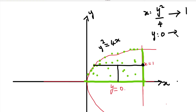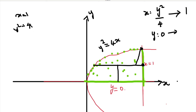For the y upper limit, we move the strip to the top corner of the region, which is the point of intersection of the line x=1 and the curve y²=4x. Substituting x=1 into y²=4x gives y²=4, so y=2. Thus the upper limit of y is 2.